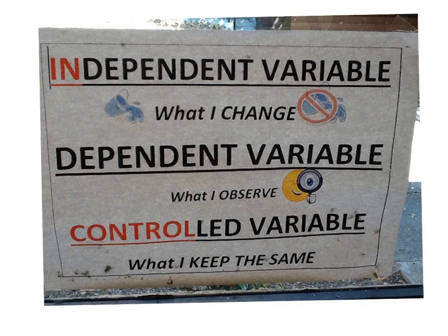The dependent variable is the variable that is measured by you, the experimenter, and it changes due to changes in the independent variable. The controlled variables are perhaps the most important because they are all the things you need to keep the same in order for the experiment to be valid and to be a fair test.